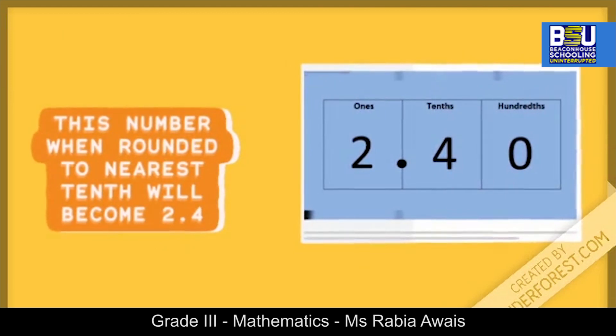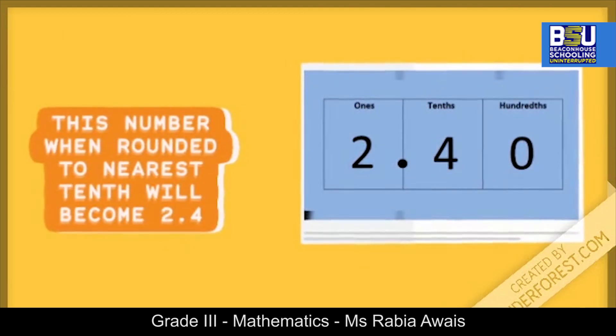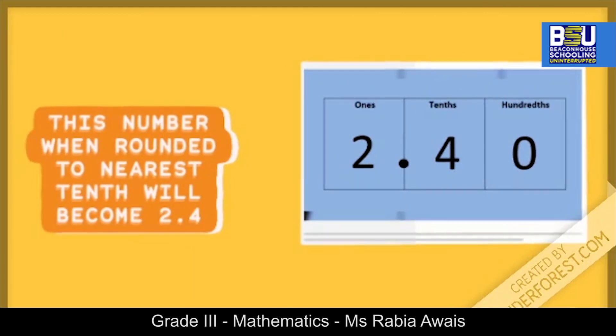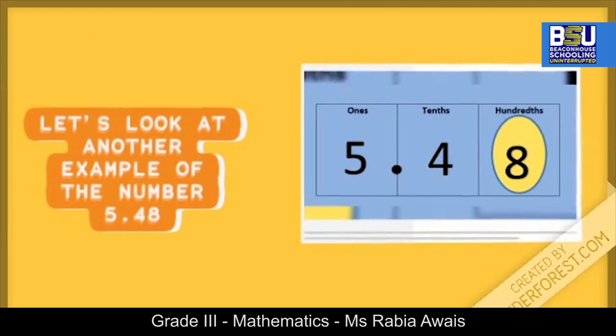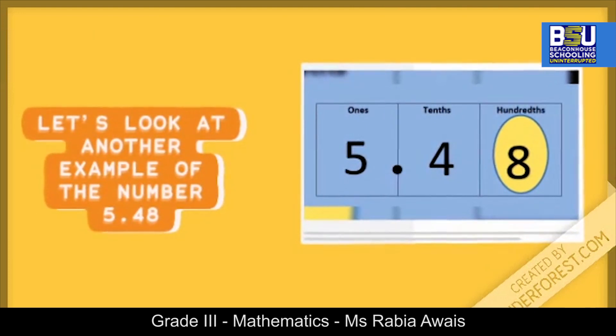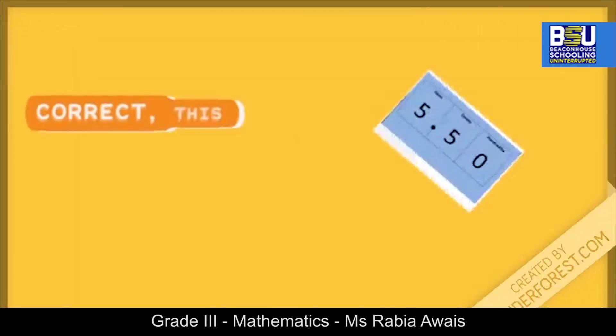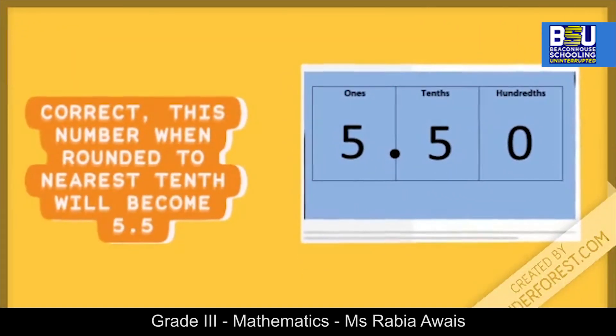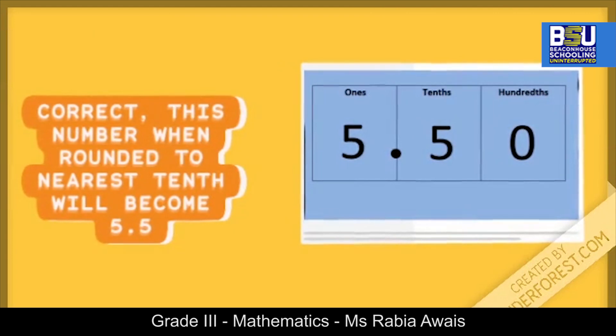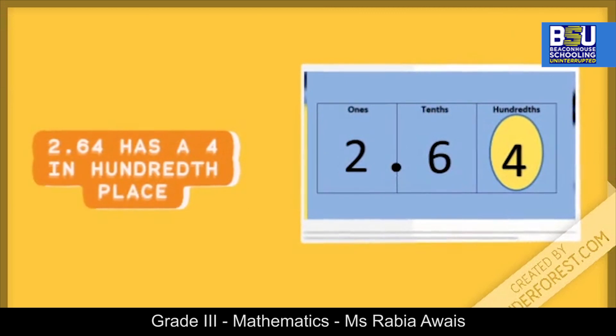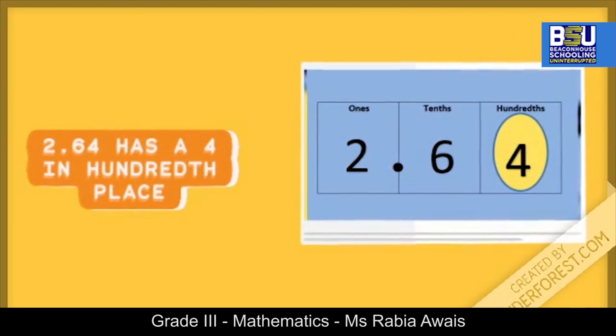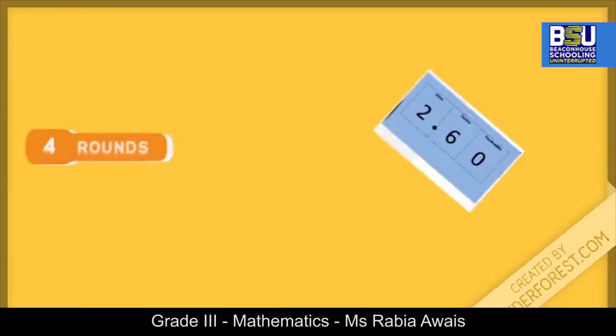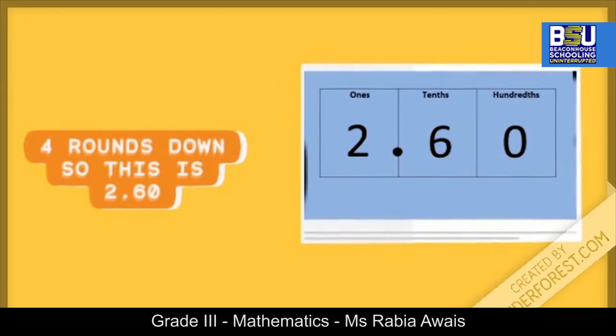Let's look at another example: the number 5.48. This number when rounded to the nearest tenth will become 5.5 because there is a digit 8 in the hundredth place. 2.64 has a 4 in the hundredth place. 4 rounds down, so this is 2.6.